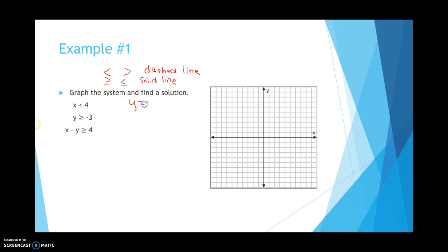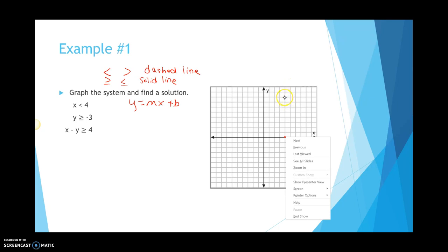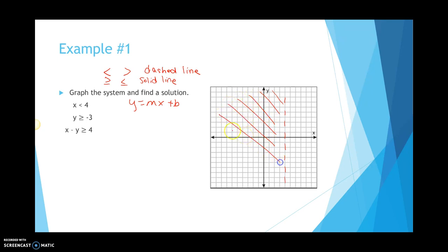Let's graph x is less than 4. X runs horizontal, so I'm going to find 4 on the x-axis and put a dot right there. Since it's x is less than 4, we are going to have a dashed vertical line. And if x is less than 4, everything is shaded to the left — less is left. We're shading there because every number to the left is less than 4.